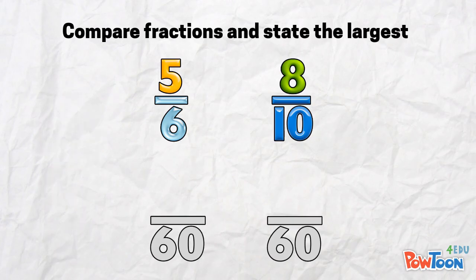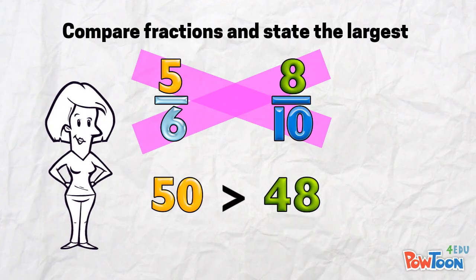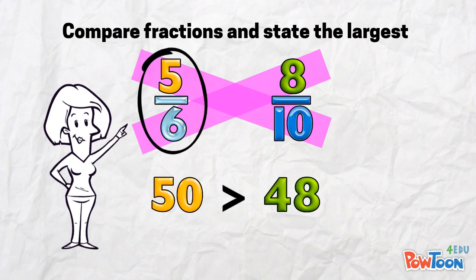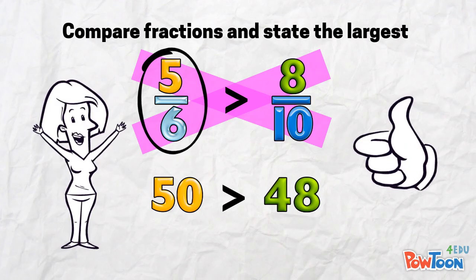The important thing here is what's going on with the numerators. 5 times 10 is 50, and 8 times 6 is 48. 50 is greater than 48. So if I circle the greater fraction in the originals, 5 sixths is greater than 8 tenths. And that is cross multiplication. Fast or what?